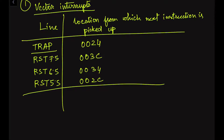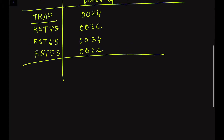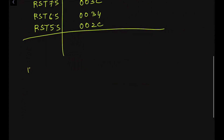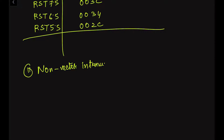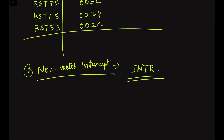The second type is the non-vector interrupt. The processor does not know the address of this type of interrupt, so the external devices need to send the interrupt address to the processor. An example of a non-vector interrupt is INTR.